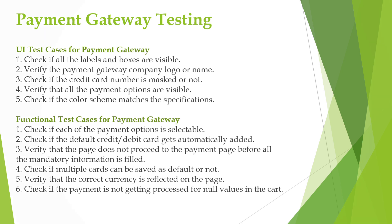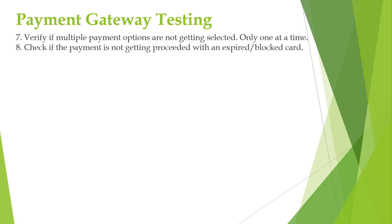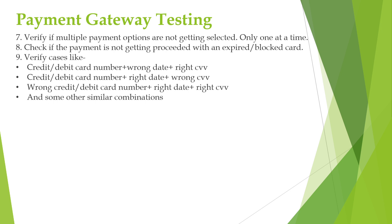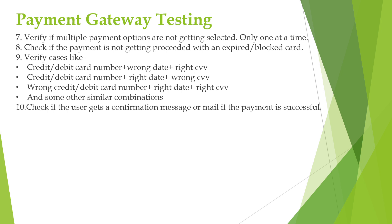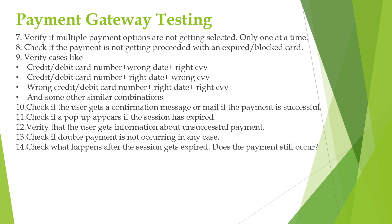Check if the payment is getting processed with an expired or blocked card. Next, verify test cases like credit card or debit card number with wrong date and wrong CVV, and credit and debit card number with wrong date and right CVV. Like this we should use different permutation and combination and write the test cases. Next, check if the user gets a confirmation message or an email once the payment is successful or not. Next, check if a pop-up appears if the session has expired. Then verify that the user gets information about the unsuccessful payment. Check if double payment is not occurring in any of the cases.